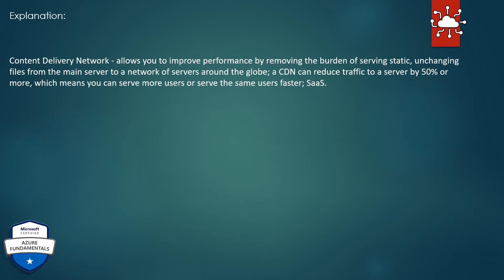Explanation: A content delivery network allows you to improve performance by removing the burden of serving static, unchanging files from the main server to a network of servers around the globe. A CDN can reduce traffic to a server by 50% or more, which means you can serve more users or serve the same users faster.